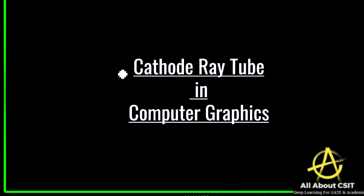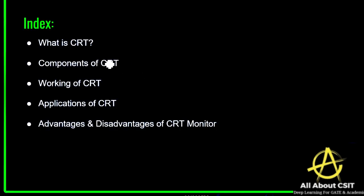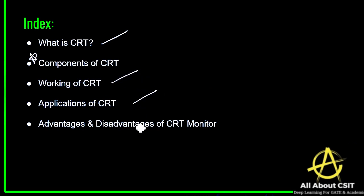The next topic in computer graphics is the cathode ray tube. The topics covered in this video are: what exactly the cathode ray tube is, what are the main components present in the CRT, the working of the CRT, applications of CRT, and finally the advantages and disadvantages of using the CRT monitor. By the end of this video you'll get complete clarity on what the cathode ray tube is.